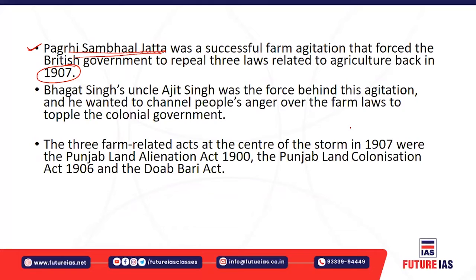Going back to 1907, the Pagri Samhal movement — also known as Pagri Samhal Jakta — was a successful farm agitation because it forced the British government to repeal those three controversial farm laws related to agriculture. Ajit Singh, the uncle of Bhagat Singh, was the main person behind this agitation, which he saw as a channel through which people's anger over unjust farm laws could be directed.